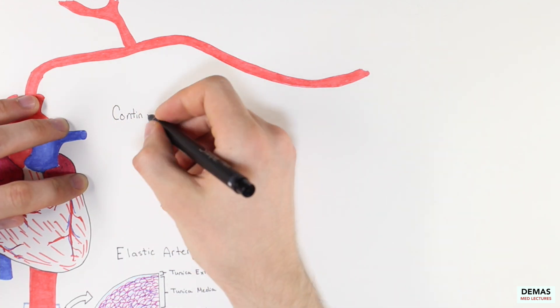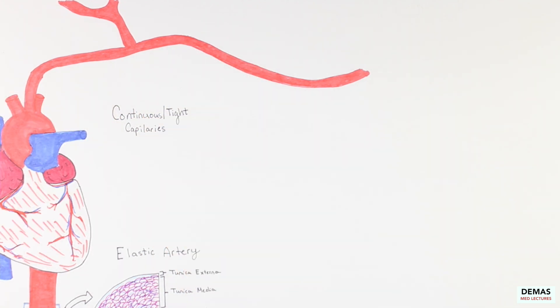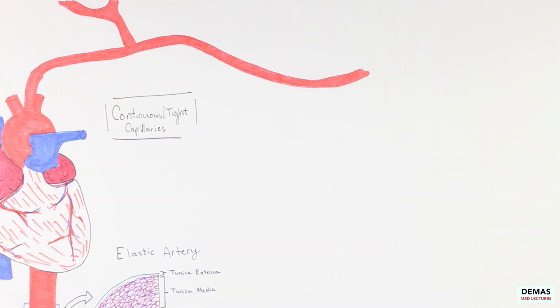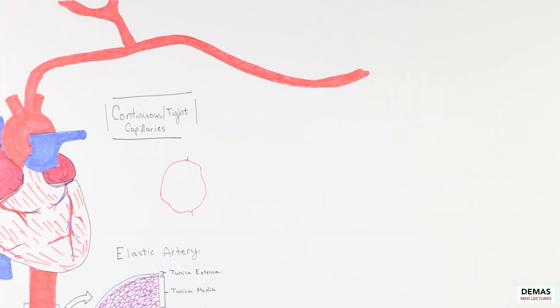Continuous or tight capillaries, fenestrated, and discontinuous capillaries. Capillaries have extremely thin walls to allow for exchange of fluid ions and molecules between the blood and the adjacent tissues.